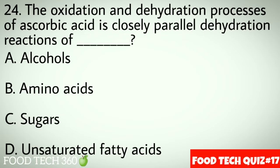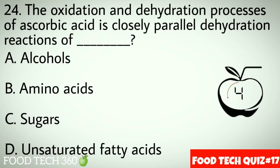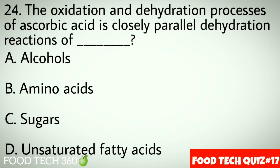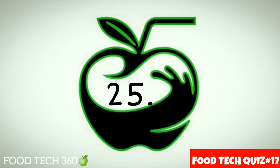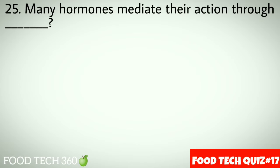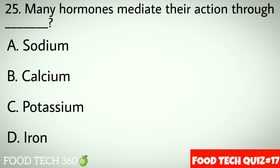Question number 24: The oxidation and dehydration processes of ascorbic acid closely parallel the dehydration reaction of dash. Options: A. Alcohols, B. Amino acids, C. Sugars, D. Unsaturated fatty acids. Correct answer: C. Sugars.